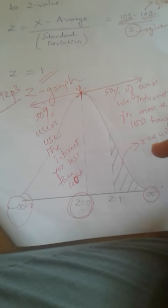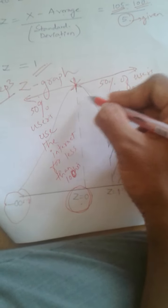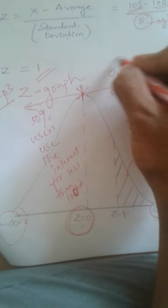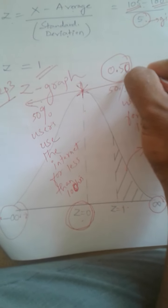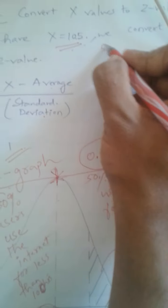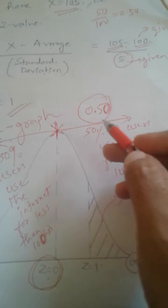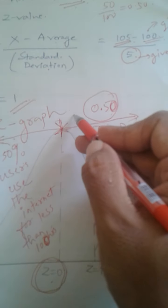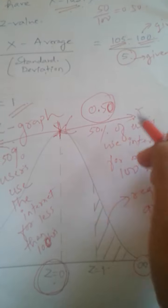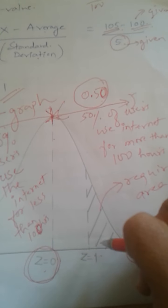We know that this area from the mean to infinity is 50 percent. We can write it as 0.50, that means 50 divided by 100 equals 0.5. So this area is 50 percent, or 0.50.